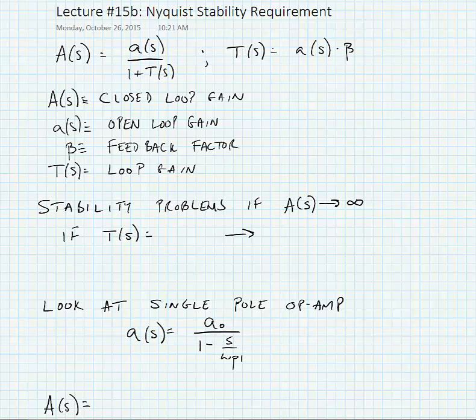We know that the closed-loop response of our op-amp is given by little a sub s divided by 1 plus t sub s, where t sub s is the loop gain and is equal to little a sub s times beta.